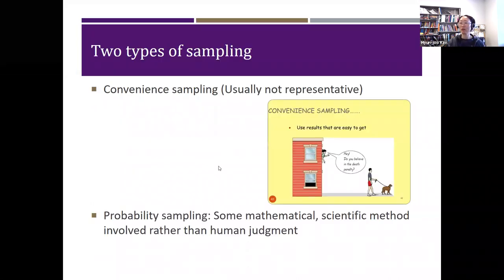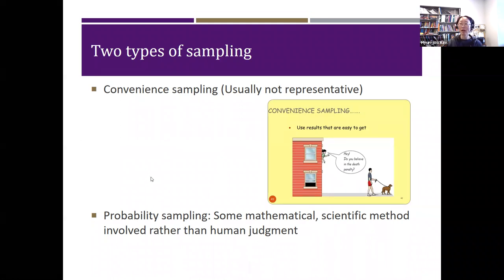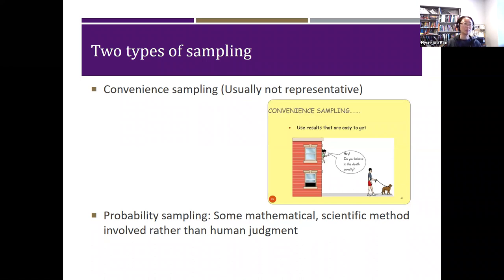There are two big types of sampling. One is convenient sampling, which means you just conveniently sample — ask your friend, your mom, your siblings, or your roommate. That's convenient, but the question is: are they going to be representative? Probably not likely. So instead of convenient sampling, you want to follow some mathematical procedure and scientific method rather than human judgment so that you can have representative sampling. That's what probability sampling is — there's some probability involved and you use those scientific methods.